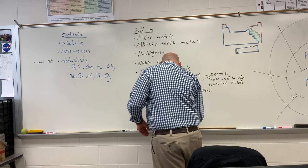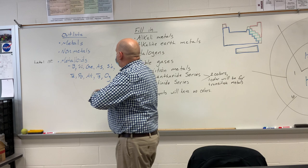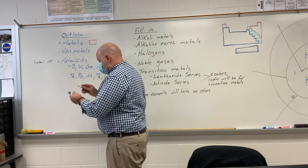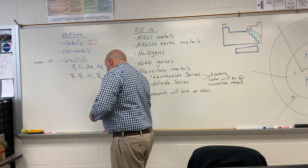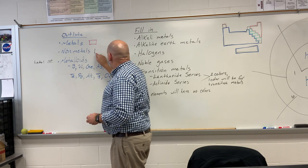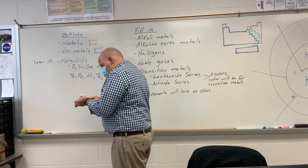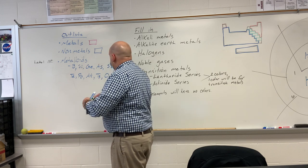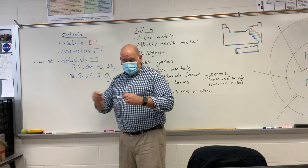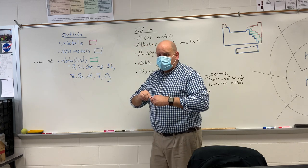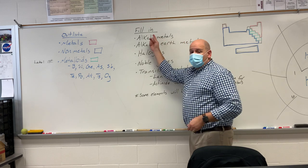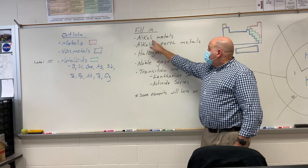You want to have something like this — let's say this is going to be my metals, this is going to be my non-metals, and this is going to be my metalloids. I'll make those say maybe green or something like that. You pick whatever color you want. Then the next thing you're going to do is fill in these right here.